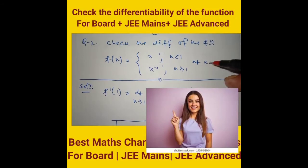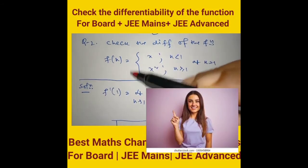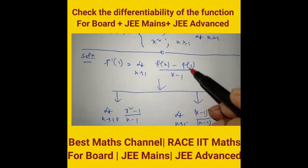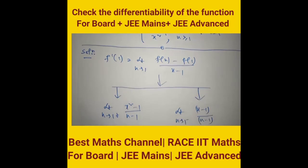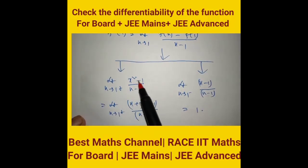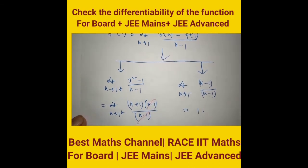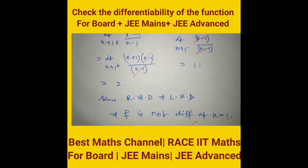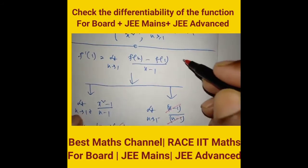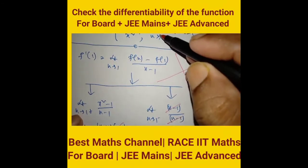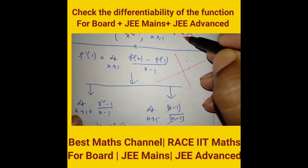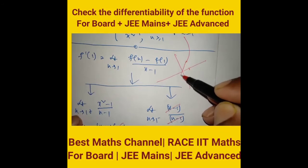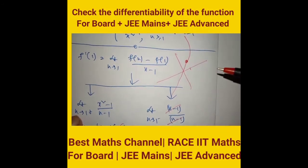Check differentiability of the piecewise function f(x) at x = 1. f'(1) = limit as x → 1 of [f(x) − f(1)] / (x − 1). Right-hand derivative: limit as x → 1⁺ gives (x² − 1)/(x − 1) = x + 1 → 2. Left-hand derivative: limit as x → 1⁻ gives 1. Since RHD ≠ LHD, f is not differentiable at x = 1. The graph shows a corner point at x = 1.